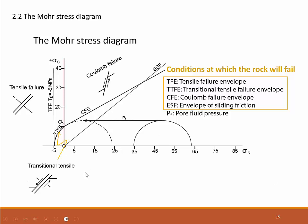The three failure envelopes represent rock failure according to different modes. The tensile failure envelope illustrates conditions for tensile failure — simply tensile opening of a fracture perpendicular to the fracture surface. The transitional tensile failure envelope indicates failure by tensile opening in combination with lateral shearing. Coulomb failure is displacement along a fracture surface without a tensile opening component; displacement is fully achieved by lateral shearing.